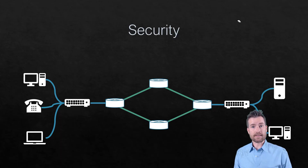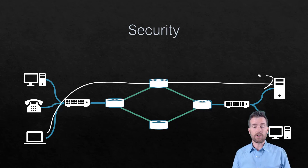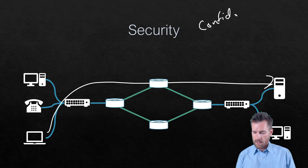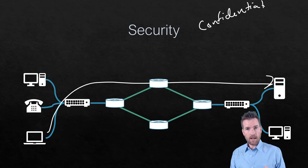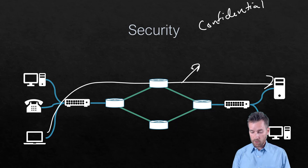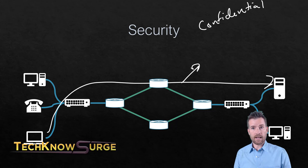The fourth element is security — our ability to get information from one point to another securely. Secure means a few different things. Number one, confidentiality is important. There's a lot of sensitive stuff on business networks that we don't want other people to see. If we're keeping our network secure, others won't be able to intercept that information in transit and open it up to view it. That's confidentiality.